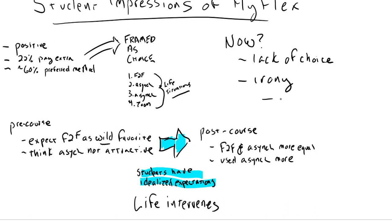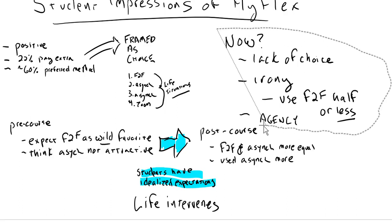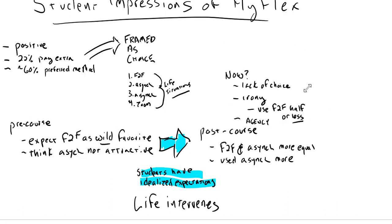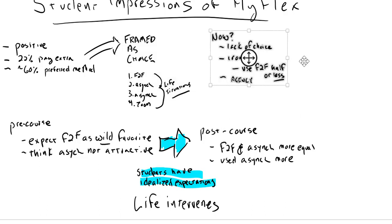There's an irony here because we know when students have the choice, they use face-to-face half or less, which is about what we'll be giving them in the best scenario, assuming we're at the right phase. But the difference here is that in this case, they don't necessarily have the agency. And so they're going to feel it not as something empowering, but as something foisted on them.